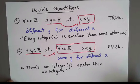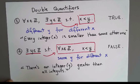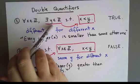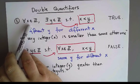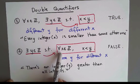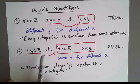So this is the difference between the two statements, and this is why the order matters. When I say 'for every x there exists a y,' I can choose different y's for different x's. When I say 'there exists a y for every x,' then the same y must work for all the x's.